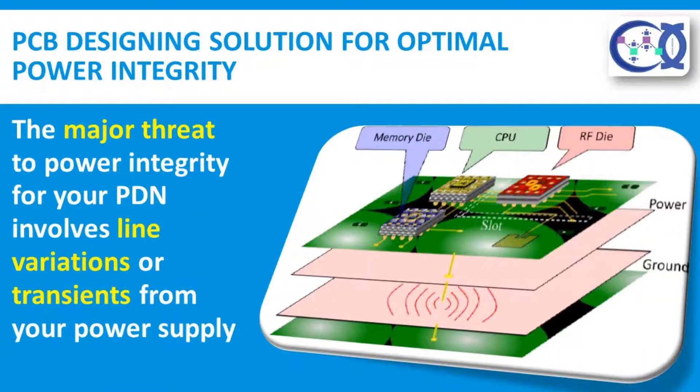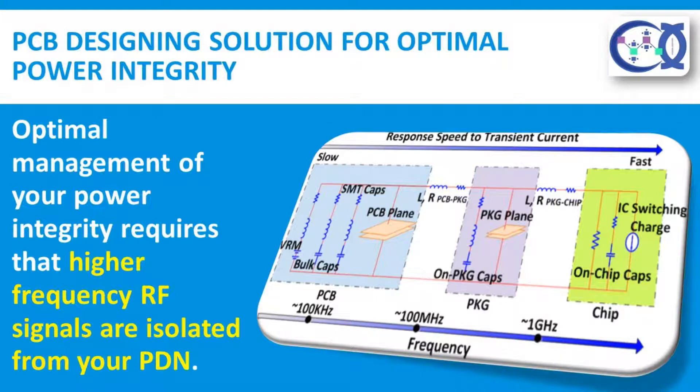PCB power integrity: a PCB can be viewed as a closed electrical system with a power distribution network, or PDN. To achieve power integrity, all components or modules must be supplied with power at the level required for operation, which is not simply making sure that voltages are at or above an acceptable level. The major threat to power integrity for your PDN involves line variations or transients from your power supply that may cause fluctuations in the quality of your power profile.